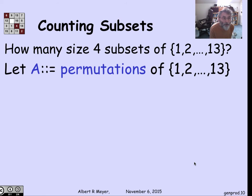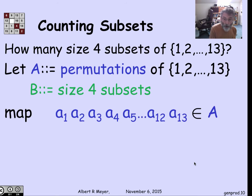Let's let A be the number of permutations of the 13 numbers. We know how to count those already - that's the generalized product rule that says it's 13 factorial. So 13 factorial ways of listing the numbers 1 through 13 without repeats. Let's let B be the unknown set of size 4 subsets. We want to count B. I'm going to define a mapping from A to B and make it k-to-1 for a useful k that I can figure out.